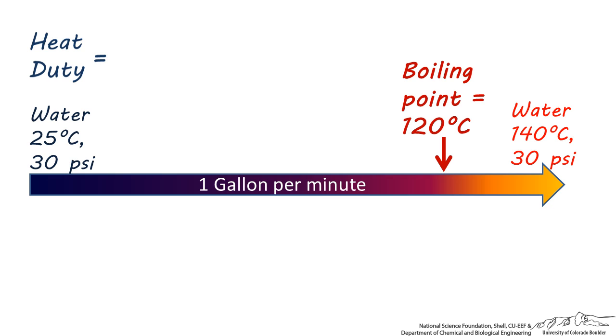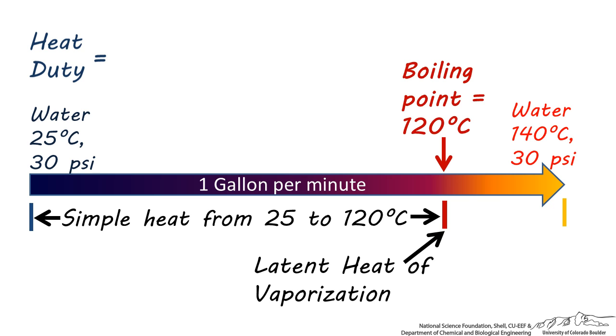What this means is that we'll need to calculate the heat duty in three parts. There's a simple heat temperature increase, where liquid water will be heated from 25 to 120 degrees centigrade. Then there will be no temperature increase, but instead vaporization, followed by another simple heat temperature increase from 120 to 140 degrees centigrade.